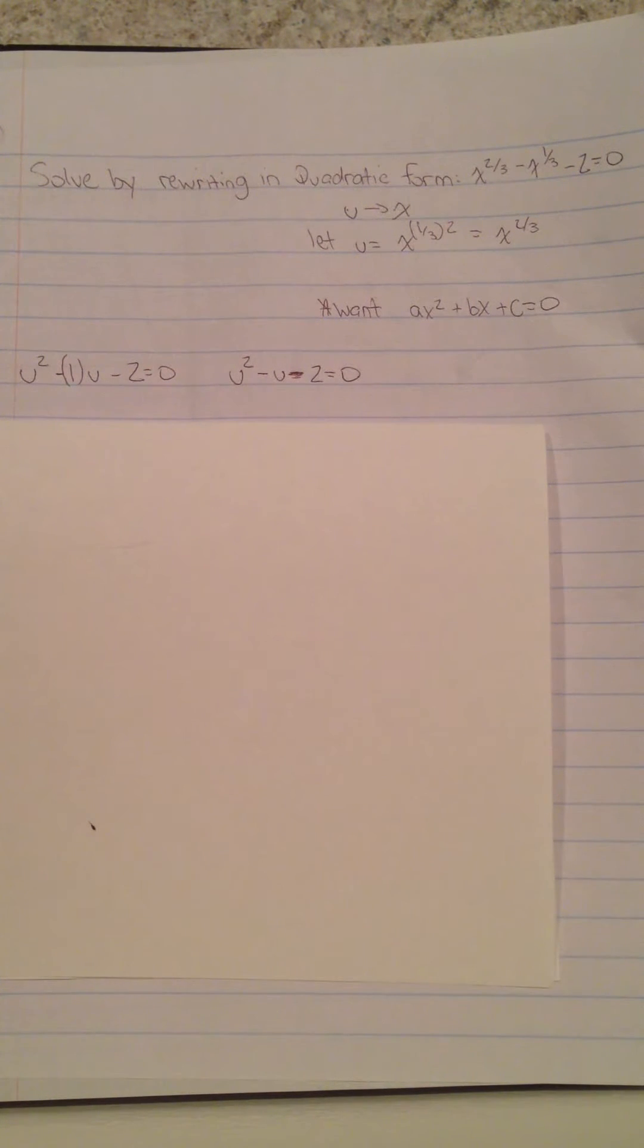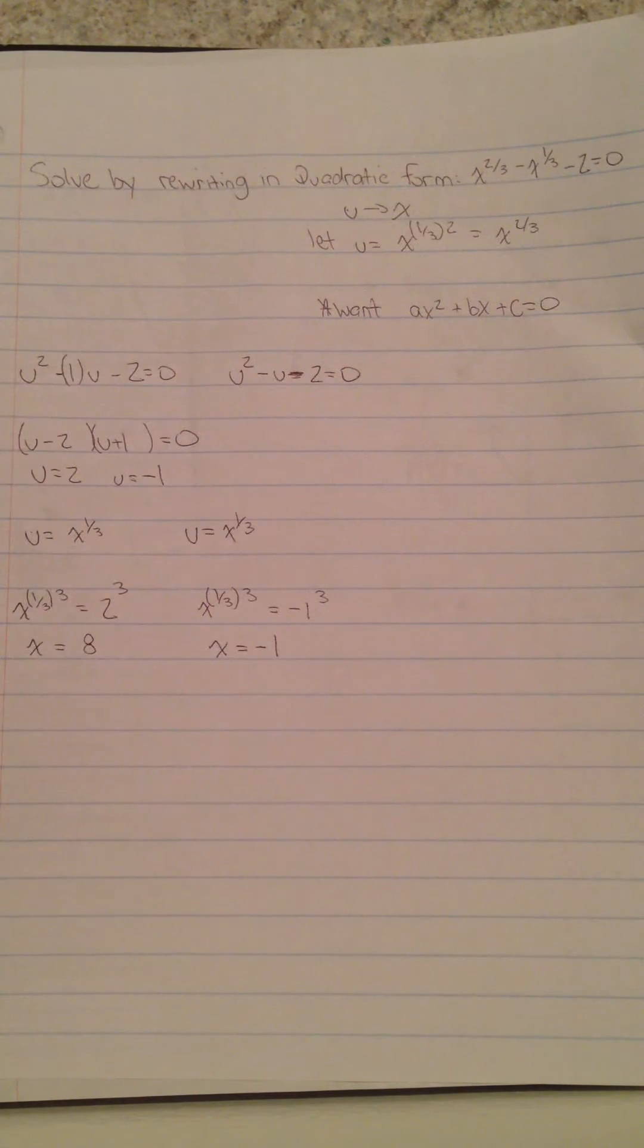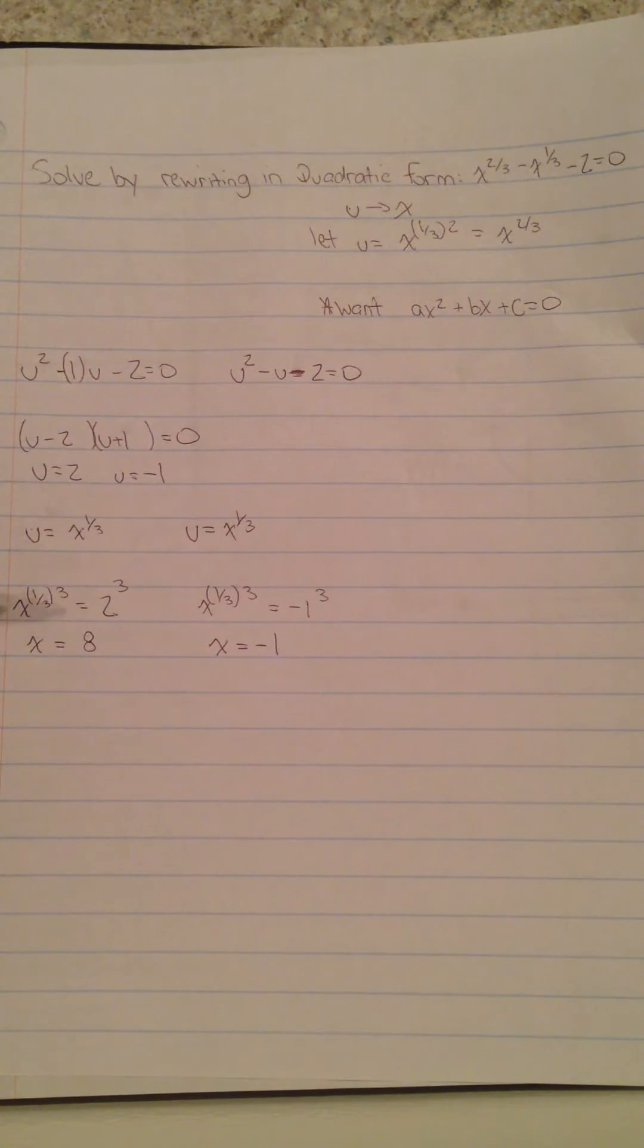Now we're going to break this up to solve for it. What we have here is (u - 2)(u + 1), and we solve for u. Bringing both to zero, you get u = 2 and u = -1.